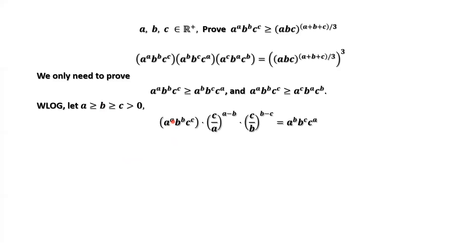Notice that a^a · b^b · c^c times (c/a)^(a−b) · (c/b)^(b−c) equals a^b · b^c · c^a. We want to prove the first inequality: the first term is the same as the left-hand side, and the right-hand side of this equation matches the right-hand side of the first inequality.